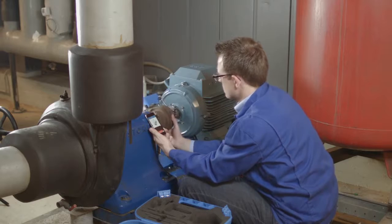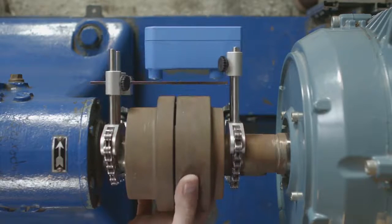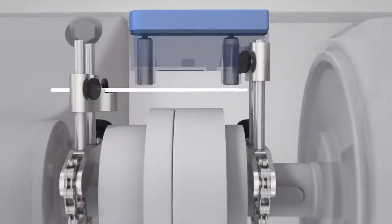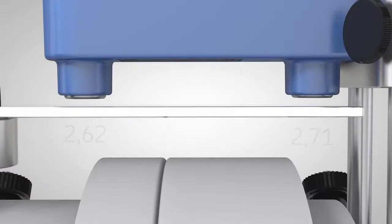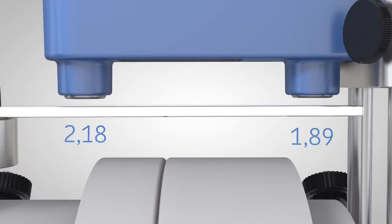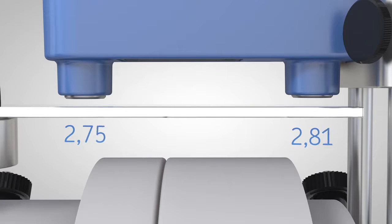The two inductive proximity sensors inside the instrument measure the distance to the reference bar. Just like the dial gauges method, misalignment causes these distances to change and allows the calculation of the misalignment using the TKSA 11 app.